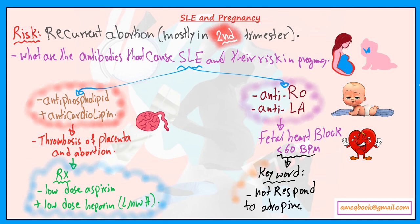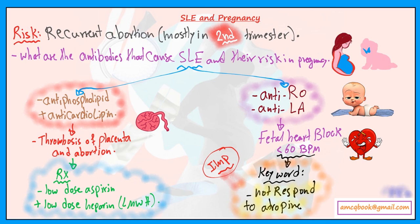So if you have a case scenario where a fetus is born to a mother with a pulse rate less than 60 beats per minute, and you give atropine but the pulse rate still does not respond, the cause is directly anti-Ro and anti-La antibodies. That's very important. That's all you need to know about SLE for the AMC MCQ exam. For the full course, you can contact us at amcqbook@gmail.com.